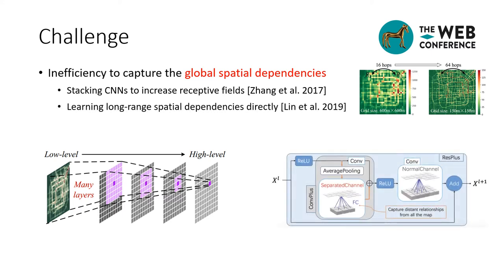Another direction is to learn long-range spatial dependencies directly. For example, DPSTN-plus attempts to capture global spatial dependencies in every layer using a REST-plus structure, which explicitly models all pairwise relationships between different regions. However, a single layer of REST-plus requires O(N²) parameters, where N is the number of grid cells. So if the granularity increases, it will induce many more parameters.